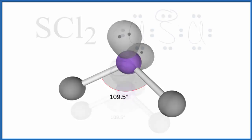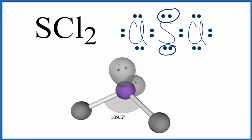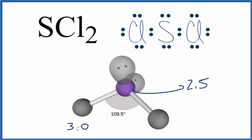Let's talk about polarity. We have our Lewis structure with two lone pairs. When we look at the electronegativity difference, the electronegativity for the sulfur atom is 2.5, and the electronegativity for each chlorine is 3.0.